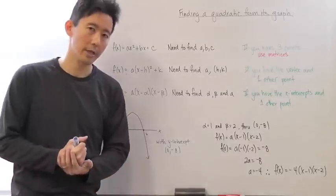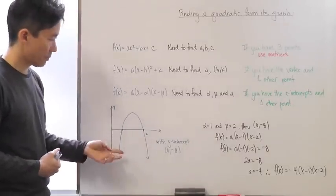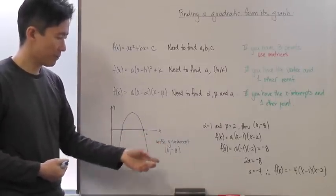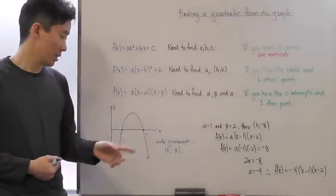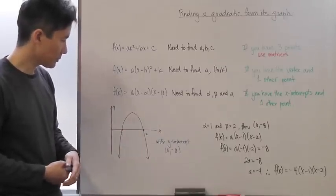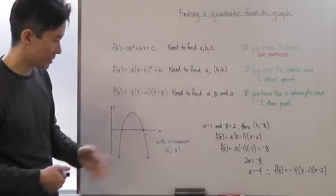Let's take a look at a quick example here. Say, for example, you have this particular parabola opening down, has a y-intercept of 0, negative 8. Notice that we have the x-intercepts at 1 and at 2.